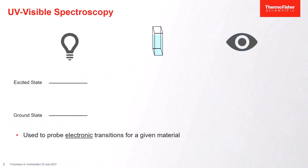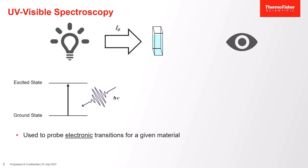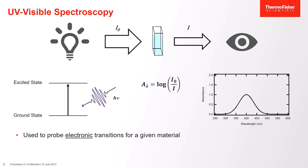Before we get into derivative measurements we should discuss UV visible spectroscopy in general. This method is used to probe electronic transitions within a given material. We shine light of intensity I₀ onto our sample, and given that the photon wavelength allows sufficient energy to promote electrons from the ground state to the excited state, we see absorption of that light and a loss of its intensity. Within the software we use an equation that takes the ratio of I₀ and I to determine absorption as a function of wavelength.